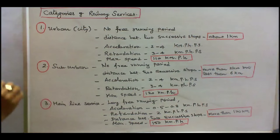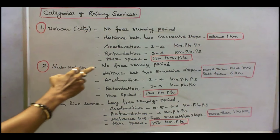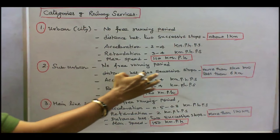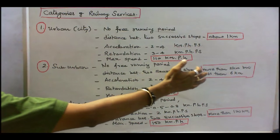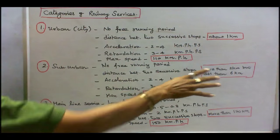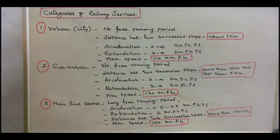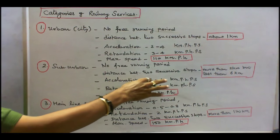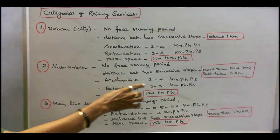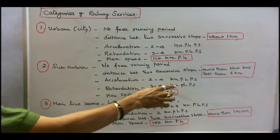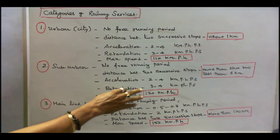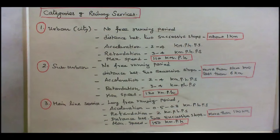Next is suburban service. It has no free running period. The distance between two successive stops is more than 2 km but less than 6 km. Acceleration is 2 to 4 km/h/s, retardation is 3 to 4 km/h/s, and maximum speed is 120 km/h.